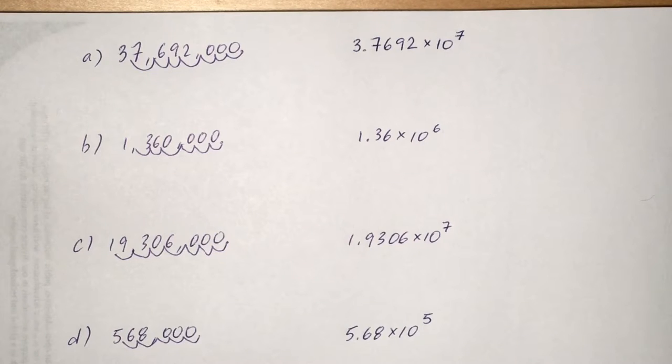And of course, we see there's 3, 7, 6, 9, 2. So in our number, we're going to put 3.7692 times 10 to the 7th.